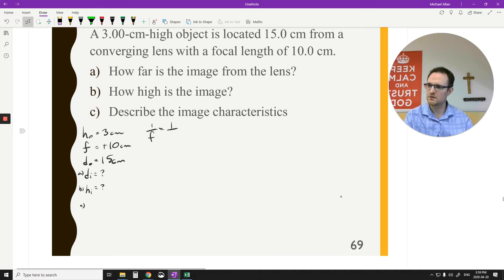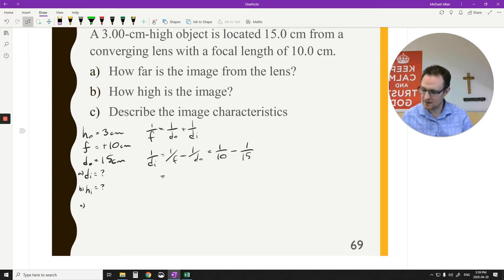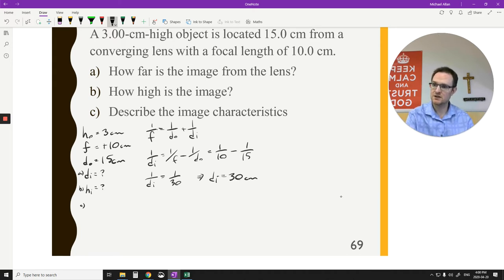1 over f equals 1 over do plus 1 over di. We are looking for di. So 1 over di equals 1 over f minus 1 over do. So 1 over 10 minus 1 over 15. Now you think that would be a negative number, but it's not because 1 over 15 is technically smaller. Still a positive number. 1 over 30. Do a little flip-a-rooney here. Di equals 30 centimeters. Positive number. So it's a real image.